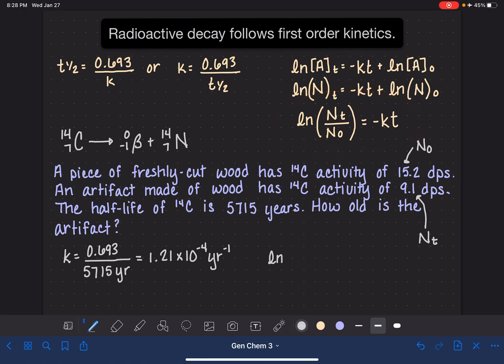So we have, for our second equation, we have the natural log of N at time t, which is 9.1, over N at time 0, which is 15.2. And I'm just going to leave the units off because they're just going to cancel each other out.